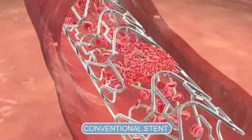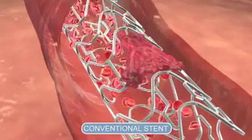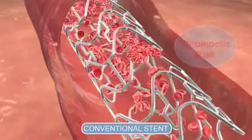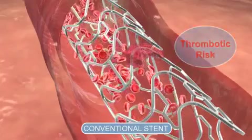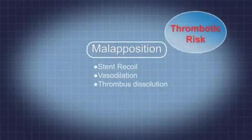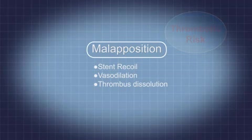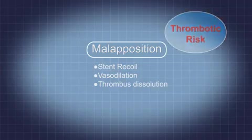Malapposition is the primary predictor of stent thrombosis. Floating struts disturb blood flow and increase thrombotic risk. With conventional stents, malapposition is induced by stent recoil, vasodilation, and thrombus dissolution.